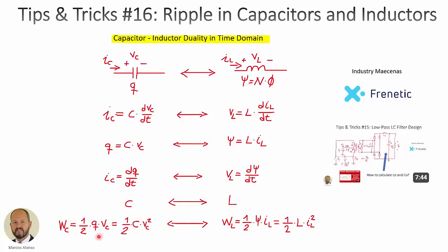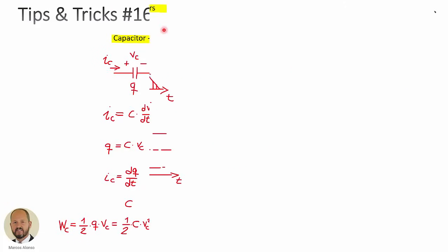Regarding the energy stored in a capacitor, it's a similar situation. The energy is 1/2 times the charge times the voltage, or 1/2 times the capacitance times the voltage squared. In the case of an inductor, we substitute charge by flux linkage and voltage by current, and because flux linkage is the inductance times current, we can write 1/2 times inductance times the current through the inductor squared.